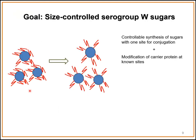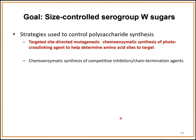One goal of my independent research is to use the serogroup W capsule polymerase to make size-controlled sugars so that we can move towards a well-defined, homogeneous glyco-conjugate. We are using two strategies to control synthesis of these sugars: one is through targeted site-directed mutagenesis of the enzyme, and we're using a photocrosslinking agent to help determine which amino acids to target.